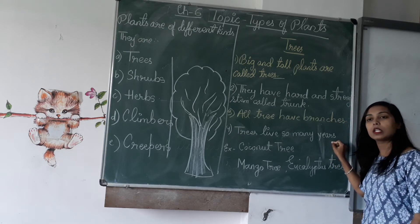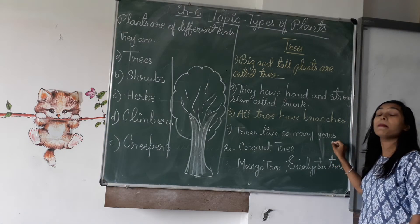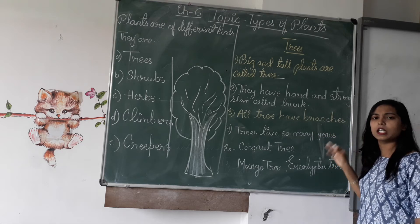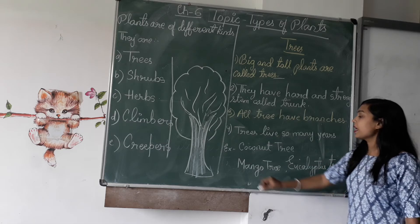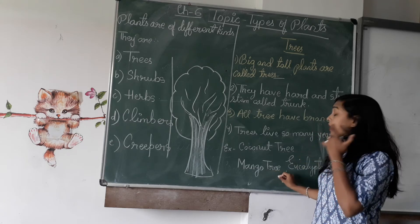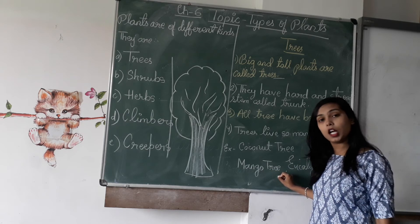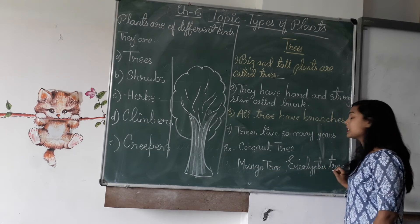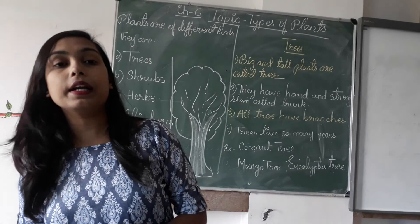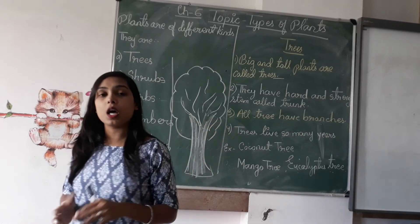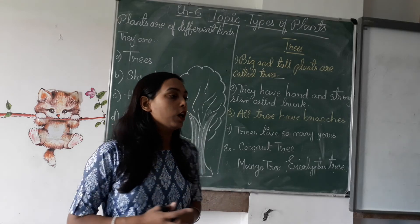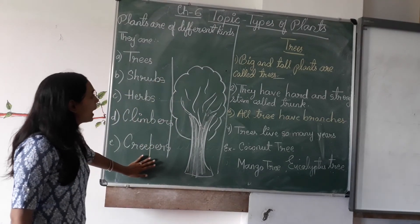Trees live for so many years — they live for 10, 20, 30 years and many more years. Examples of trees are coconut tree (nariyal ka ped), mango tree (aam ka ped), Ashoka tree, and Gulmohar tree. These trees have a very long life span — kaafi saalon tak unka life span hota hai.